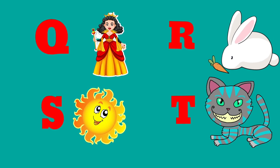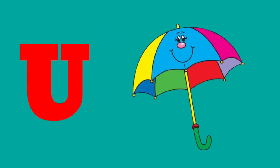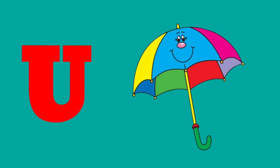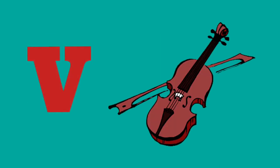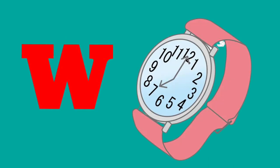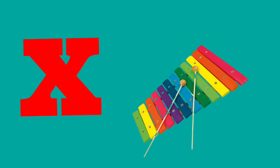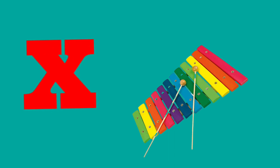U is for umbrella, u-u-umbrella. V is for violin, v-v-violin. W is for watch, w-w-watch.